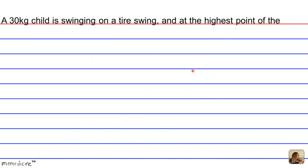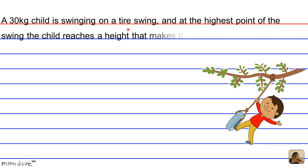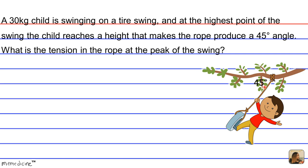A 30 kilogram child is swinging on a tire and at the highest point of the swing, the child reaches a height that makes the rope produce an angle of 45 degrees. What is the tension in the rope at the peak of the swing? So at this peak, what's the tension?